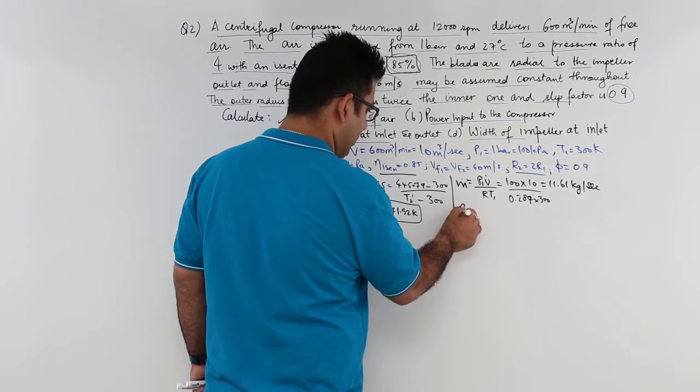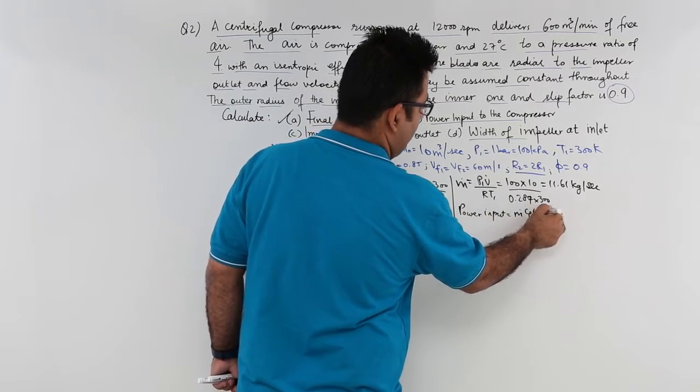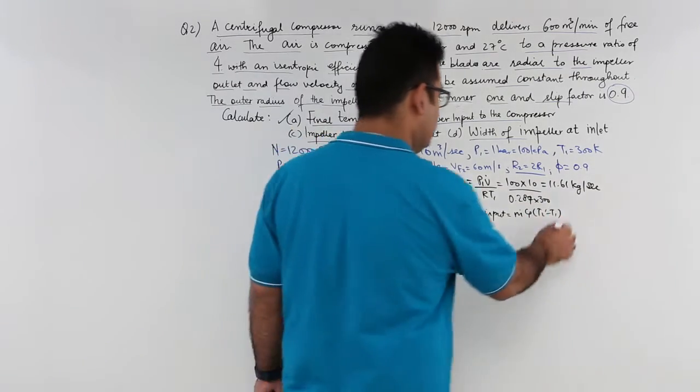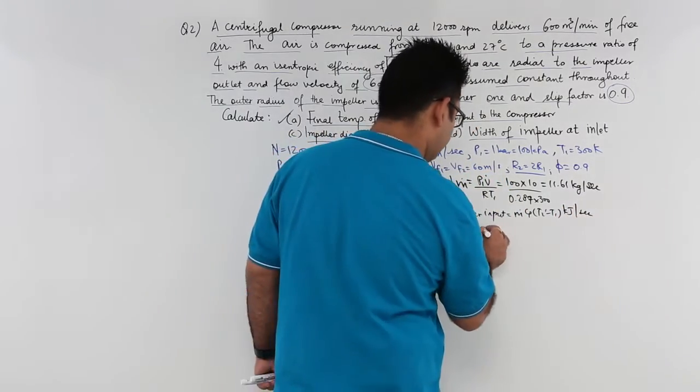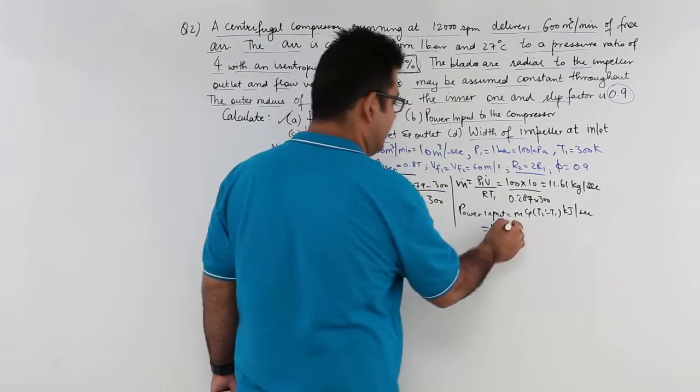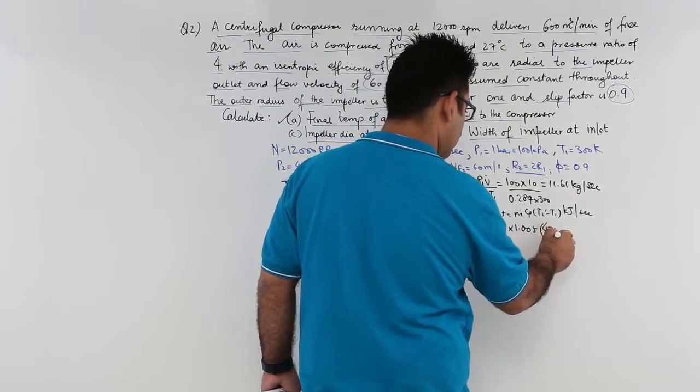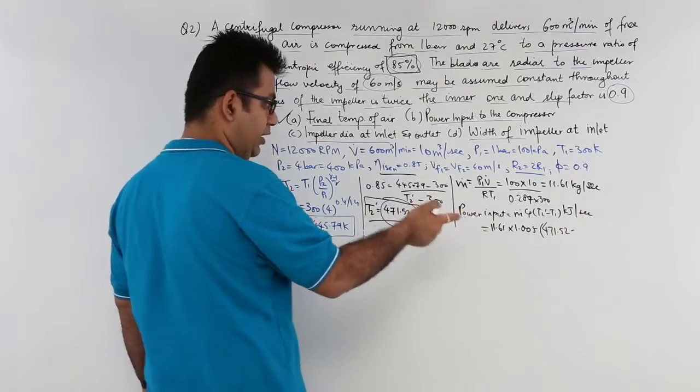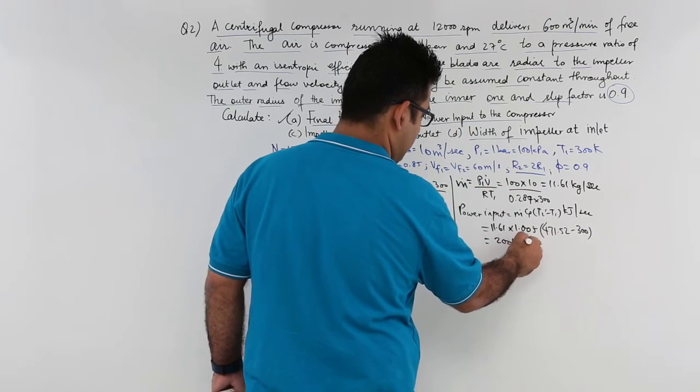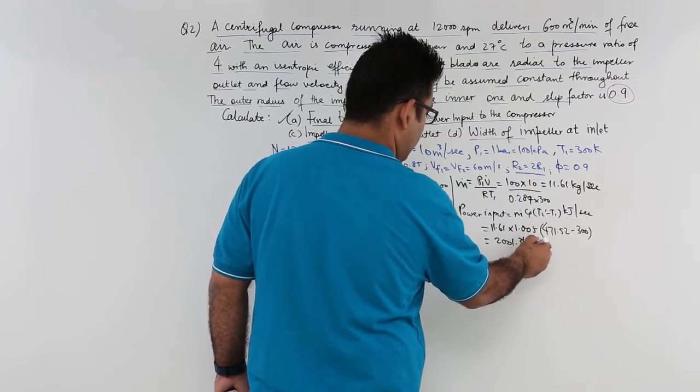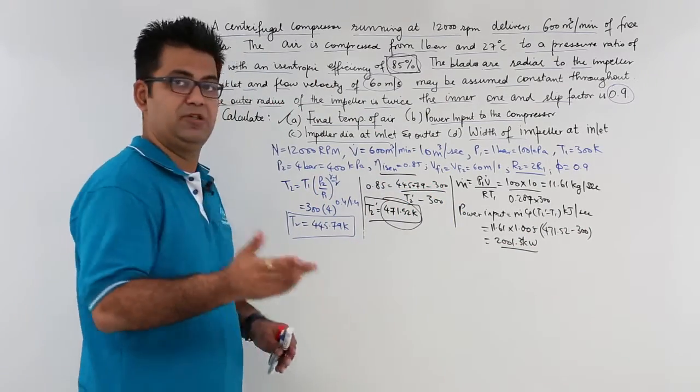Now to find out power input it is a simple thing which is M dot Cp T2 dash minus T1. So M dot is 11.61, CP for air is 1.005, T2 dash is 471.52 minus T1 is 300. This will give you a power input of around 2001.3 kilowatts. So this much amount of power has to be given in order to get this kind of performance from your centrifugal compressor. Now the second part of the question is also done.